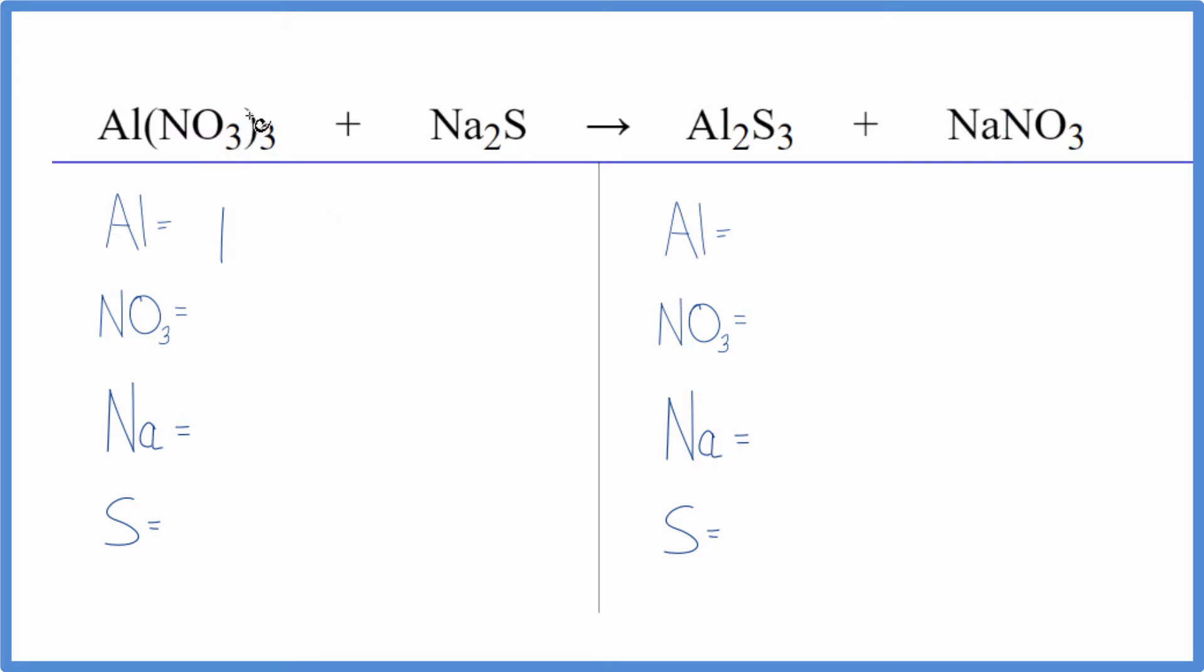So here I have that nitrate ion. I have it here again, but I have three of them. So for the nitrate, I have the 1 times 3, three nitrate ions. That's going to make balancing much easier. For the sodium, I have two and one sulfur atom.